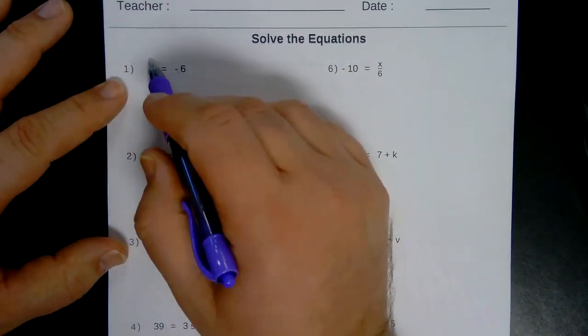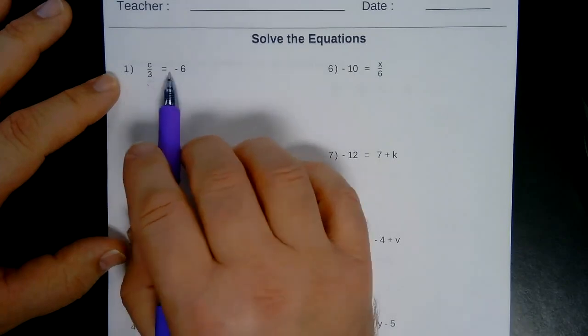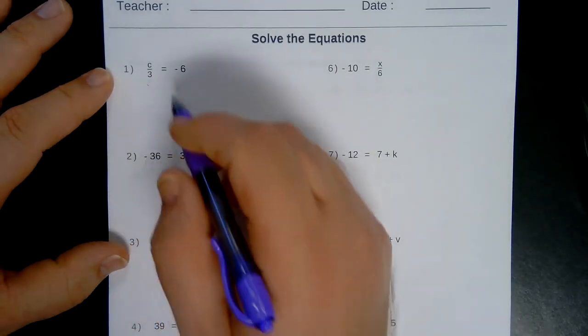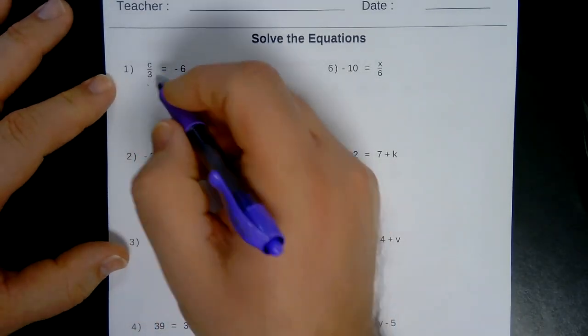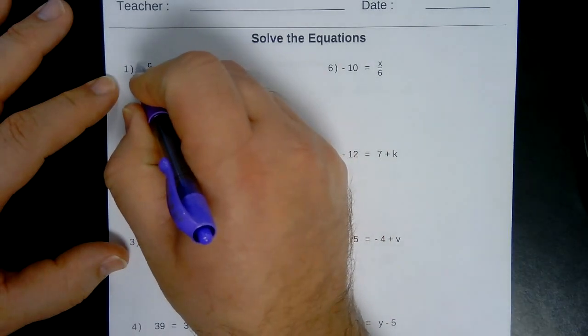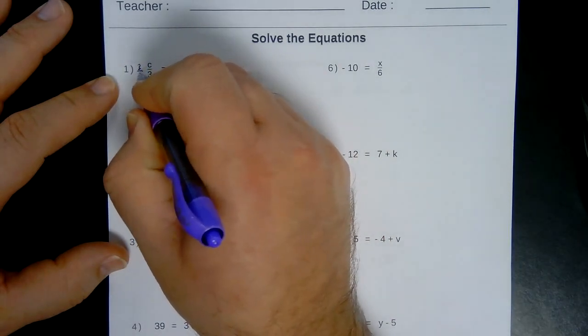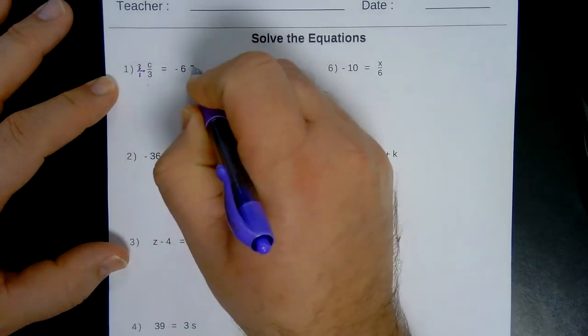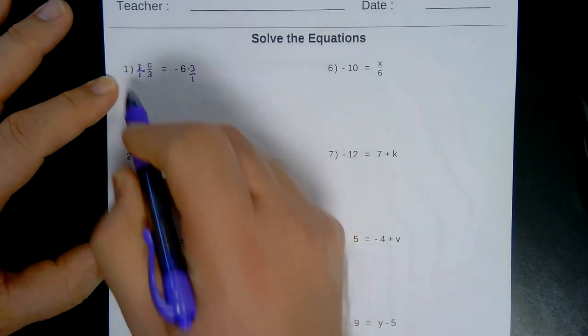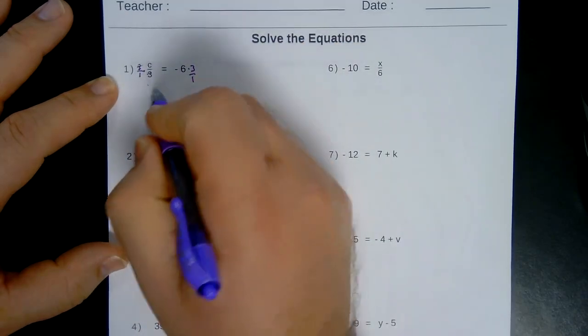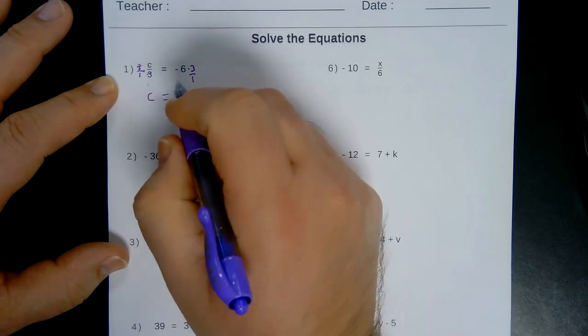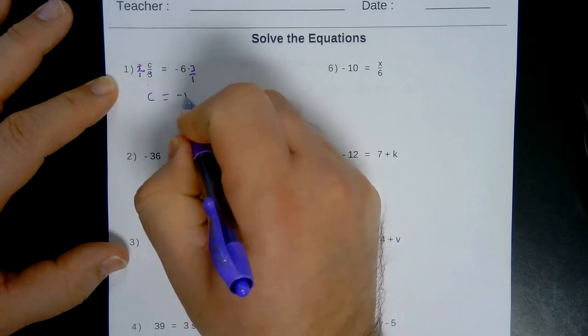Alright, first one, number one, we've got C divided by 3 equals negative 6. This is a division problem, so I'm going to multiply both sides by 3. Over 1, and 3 over 1. The 3's cancel, giving me C is equal to negative 18.